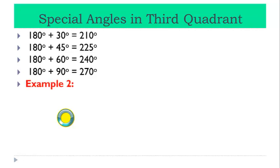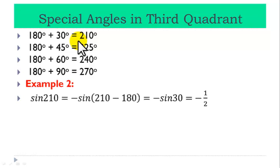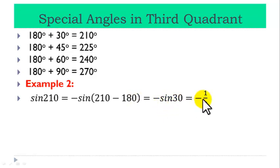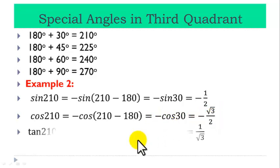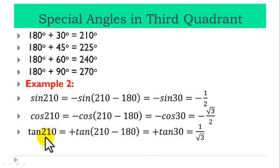Example 2: Let us find the trig ratios for 210 degrees. Sin 210 equals minus sin of (210 minus 180). Recall that sine is negative in the third quadrant and we subtract 180 from the given angle. This gives us minus sin 30, which equals minus one half. Cos 210: cosine is also negative in this quadrant, so that gives us minus cos of (210 minus 180), which equals minus cos 30, and that gives minus root 3 over 2. Tan 210: only tan is positive in this quadrant, so tan 210 equals plus tan of (210 minus 180), which equals plus tan 30, and that gives 1 over root 3.